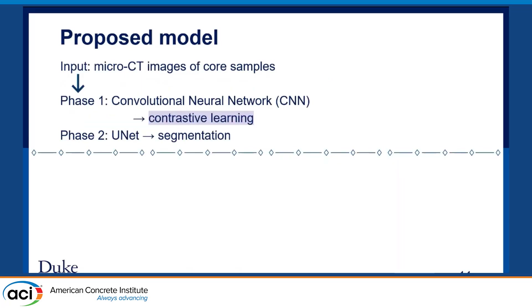Our proposed model takes our X-ray CT scans as input data. The first step runs through a convolutional neural network using a contrastive learning model. In the second step, the features learned from contrastive learning are fed into the U-Net model. Instead of using U-Net alone — which was initially built for medical image segmentation — we wanted to see if contrastive learning would enhance the segmentation from U-Net and help us get more accurate pore segmentations.